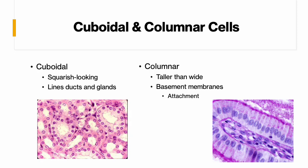The columnar cells are usually found in basement membranes — used to attach something to something else because they can stretch and they're longer. Looking at the picture, you can see they're long and skinny, and they all have a nice nucleus in the center.